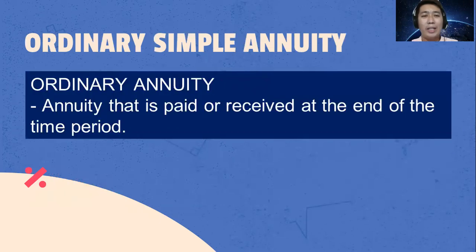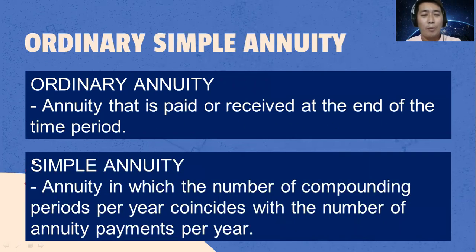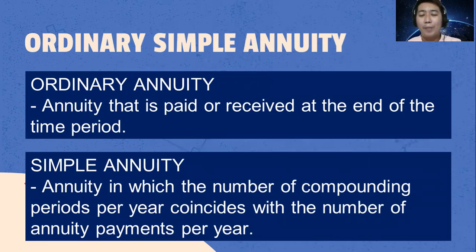What is ordinary simple annuity? An ordinary annuity is the annuity that is paid or received at the end of the time period. A simple annuity is the annuity in which the number of compounding periods per year coincides with the number of annuity payments per year.